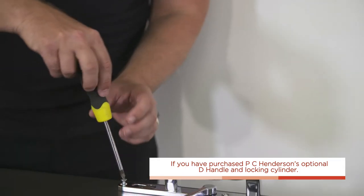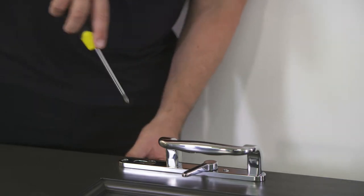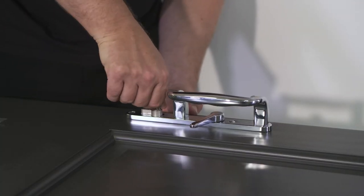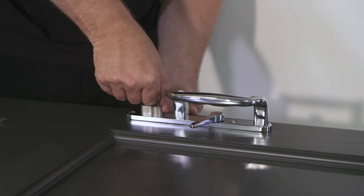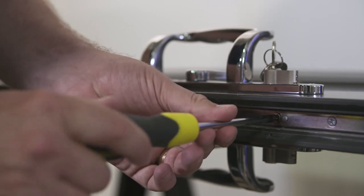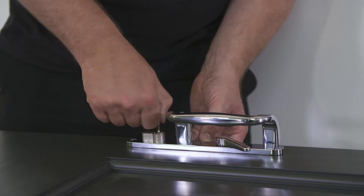Position the door handle into the pre-routed area on the front and back of the door and screw into place. Finally, fit the locking cylinder into place. Test that the locking mechanism works as it should.